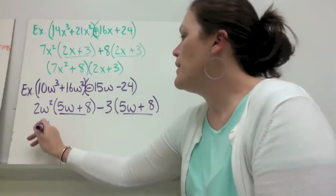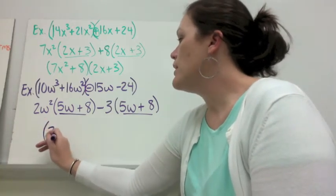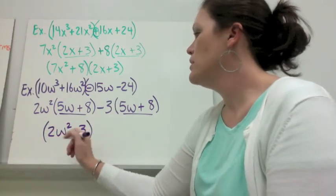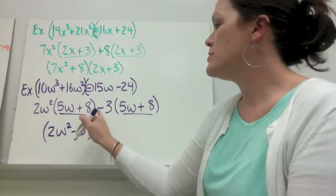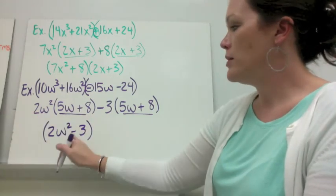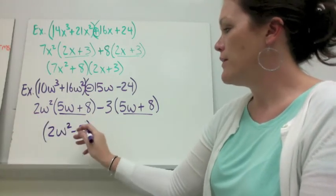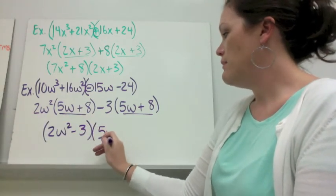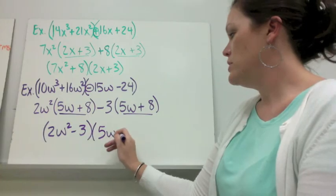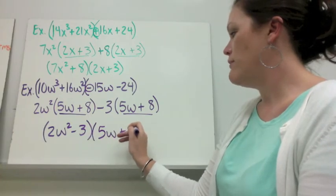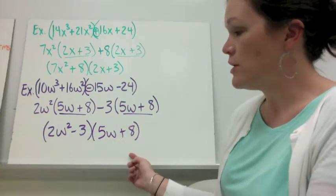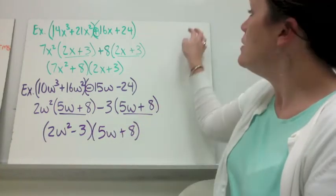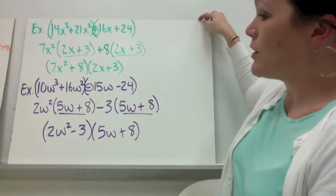So for my answer, I write down 2w squared minus 3 — the two terms I took out become my first factor — and 5w plus 8 is the common factor that comes down as my second factor. Again, you can multiply that back together to check your work.